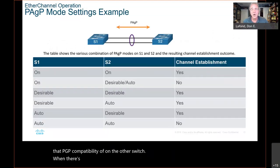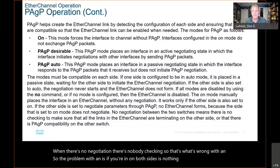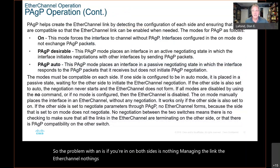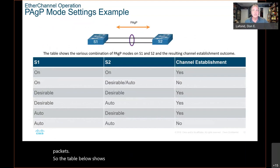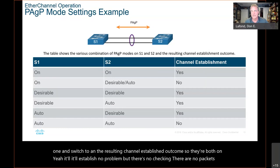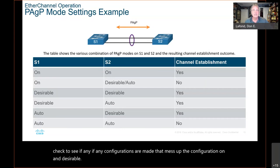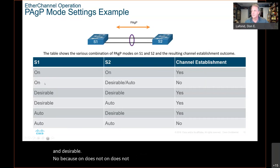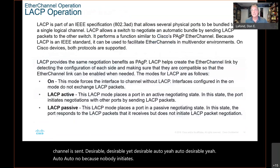When there's no negotiation, there's nobody checking. So the problem with On is: if you're on both sides, nothing is managing the EtherChannel because they are not exchanging PAGP packets. The table shows the various combinations of PAGP modes on Switch 1 and Switch 2 and the resulting channel establishment outcome. Both On: establishes, but no checking. On and Desirable: no channel, because On does not negotiate and does not send packets. Desirable and Desirable: yes. Desirable and Auto: yes. Auto and Auto: no, because nobody initiates.